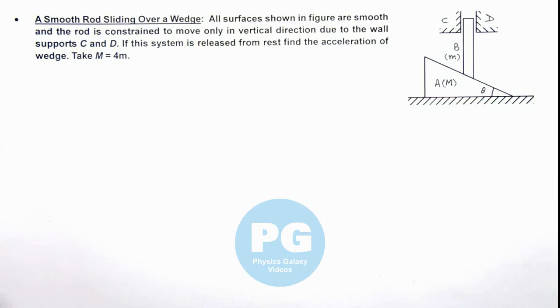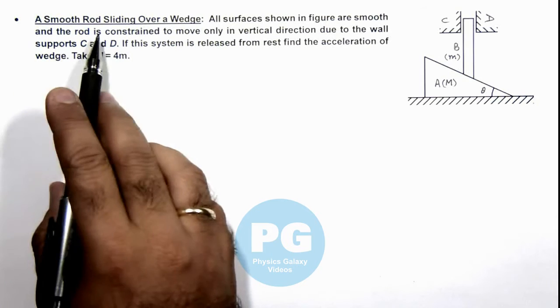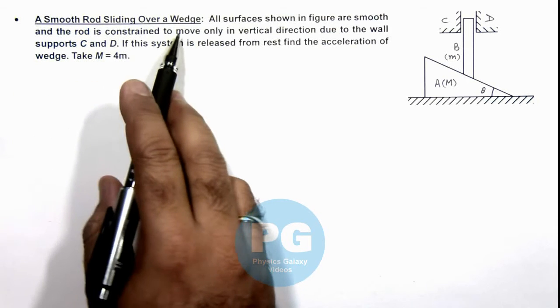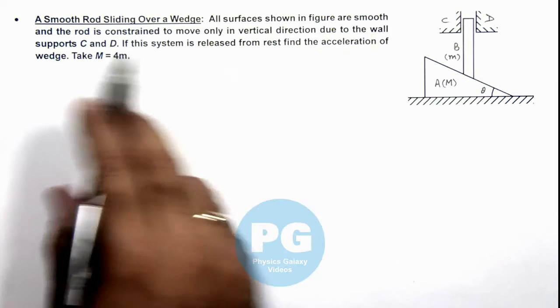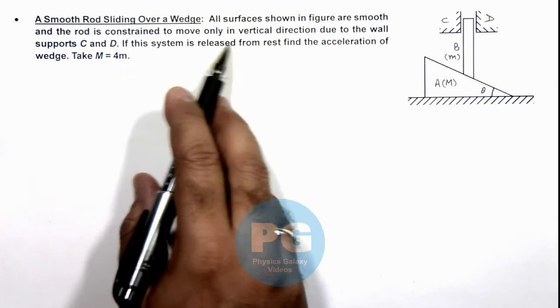This illustration is about analysis of a smooth rod sliding over a wedge. Here we are given that all surfaces shown in figure are smooth and the rod is constrained to move only in vertical direction.